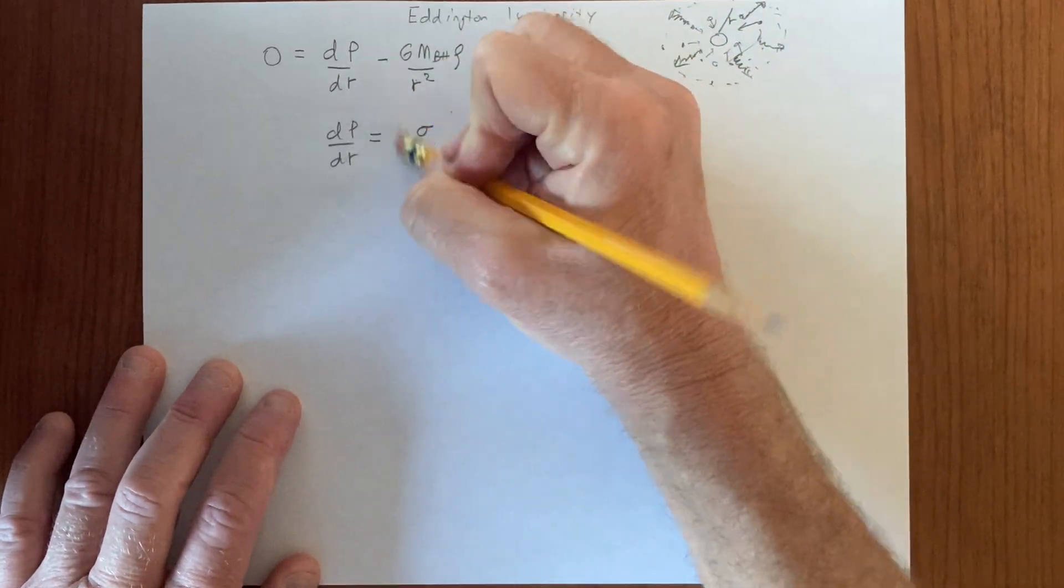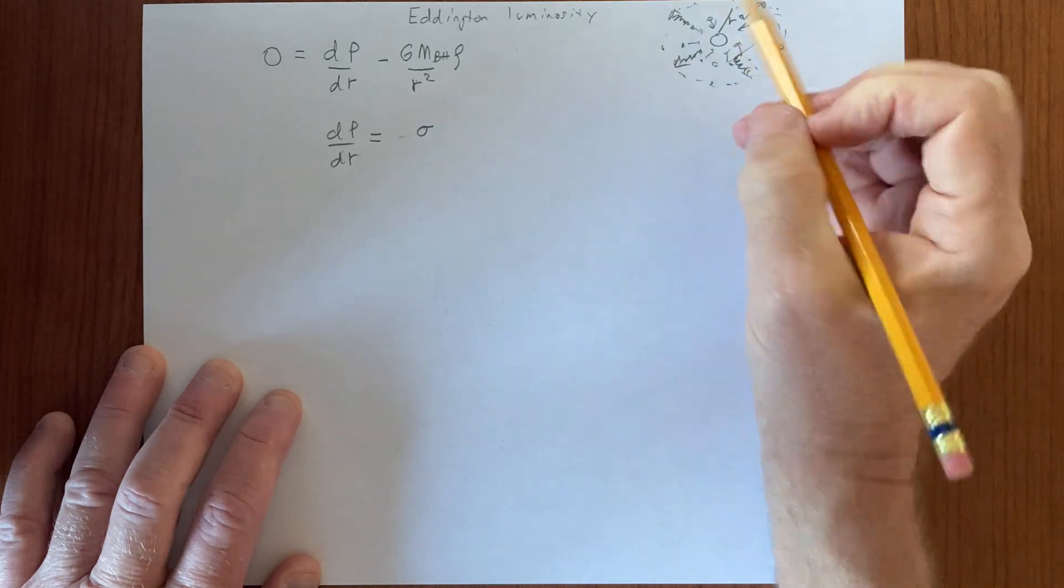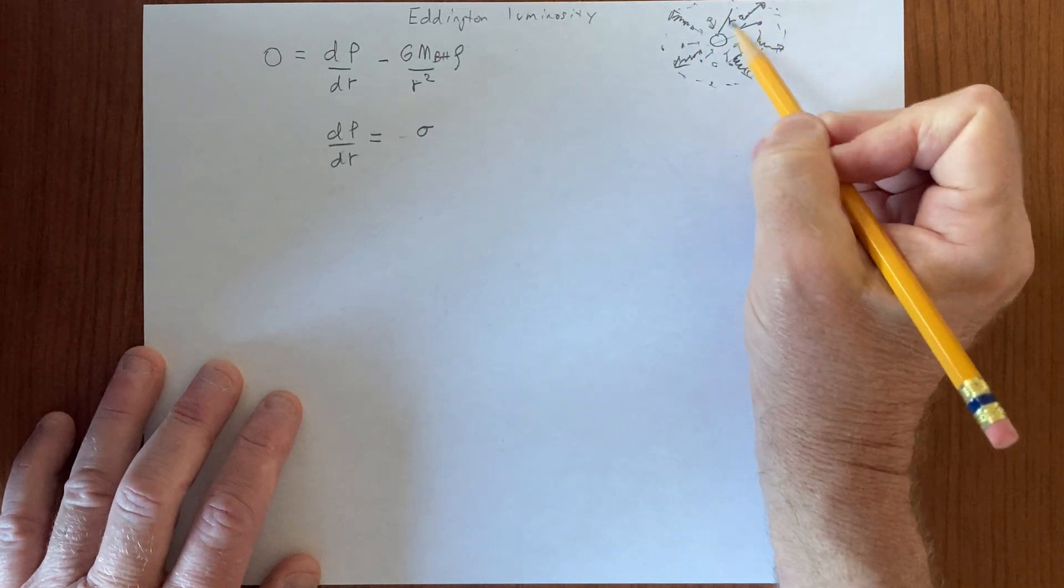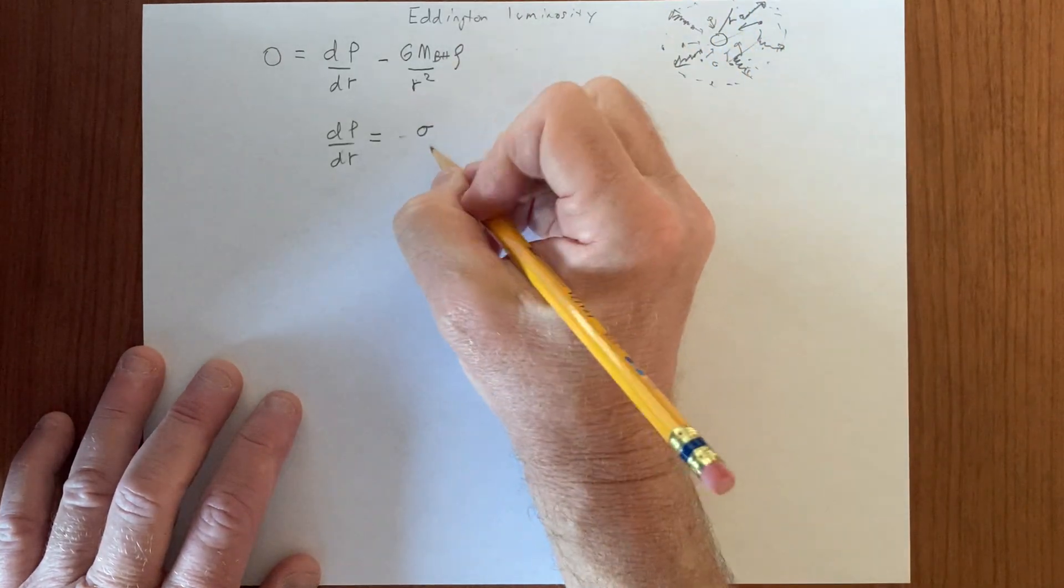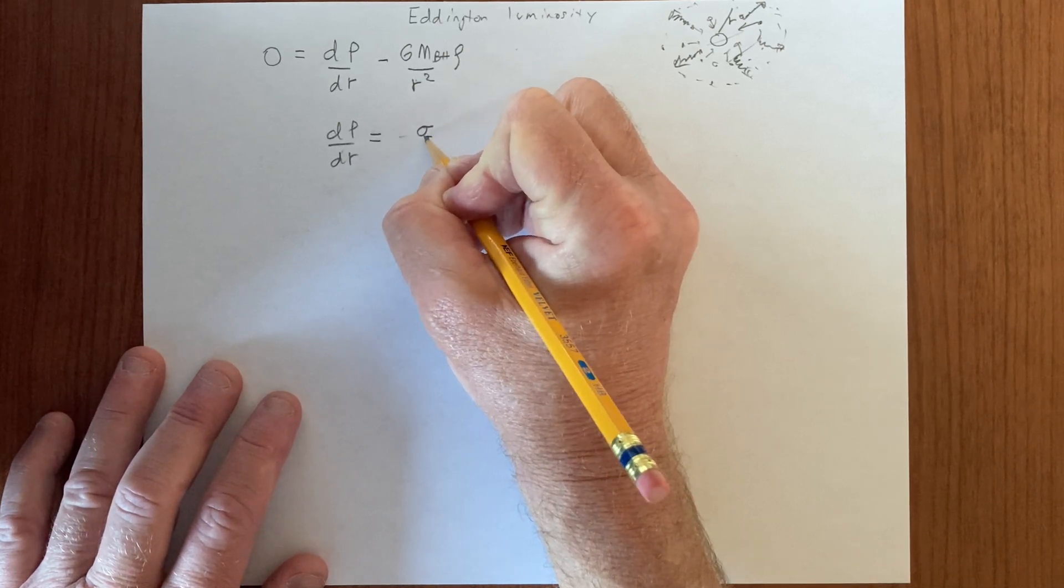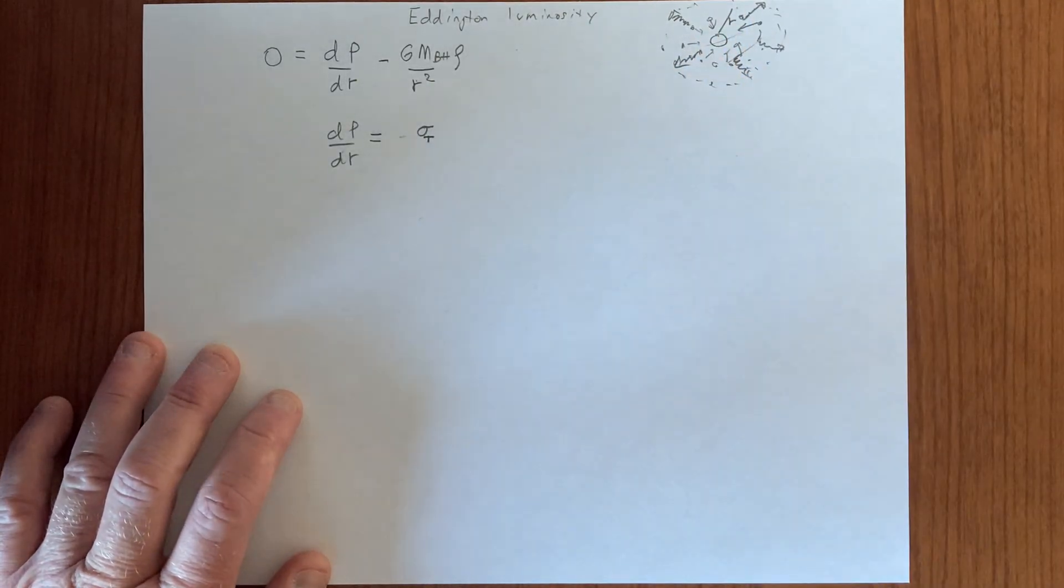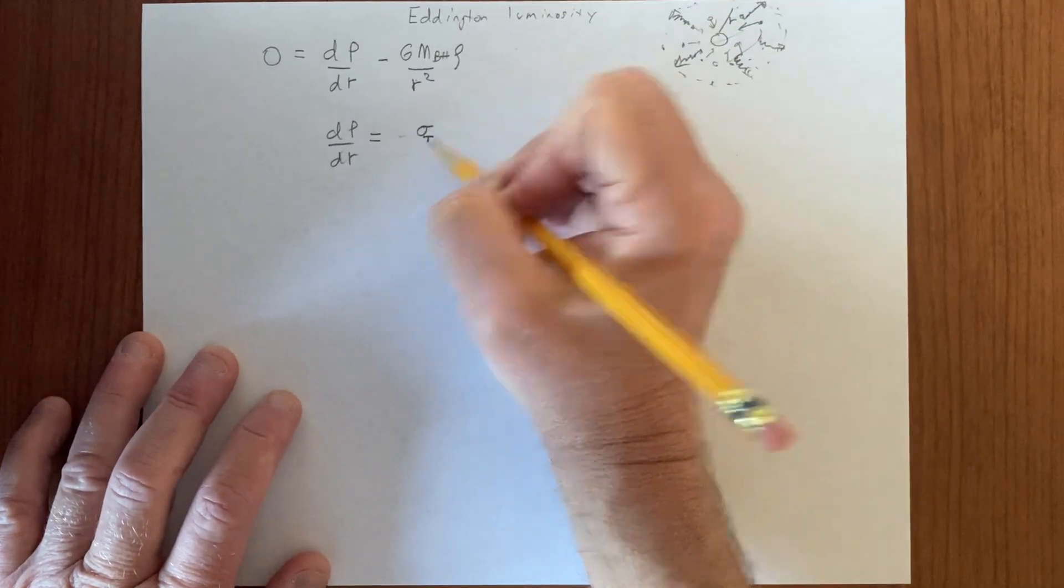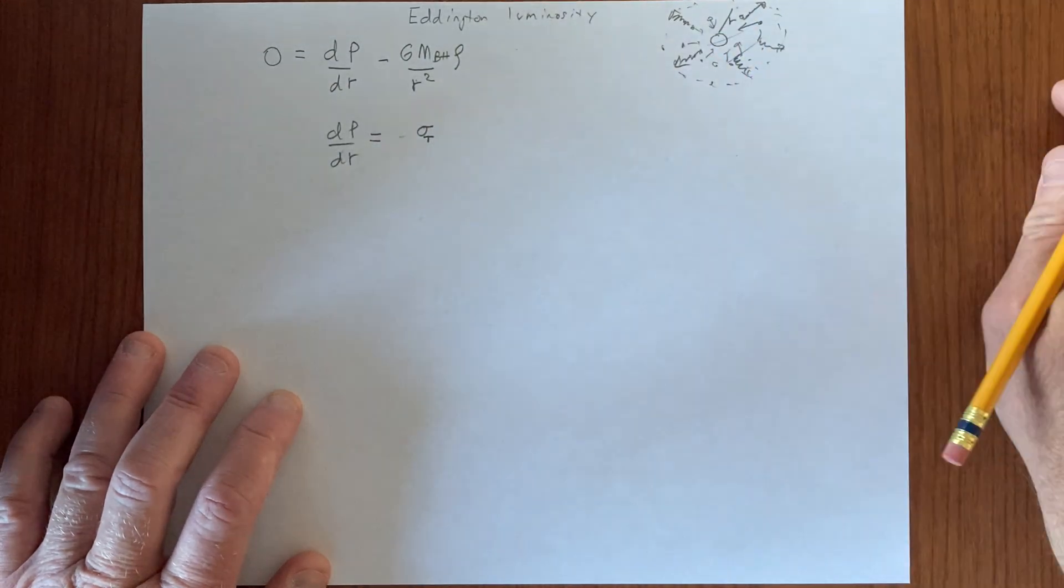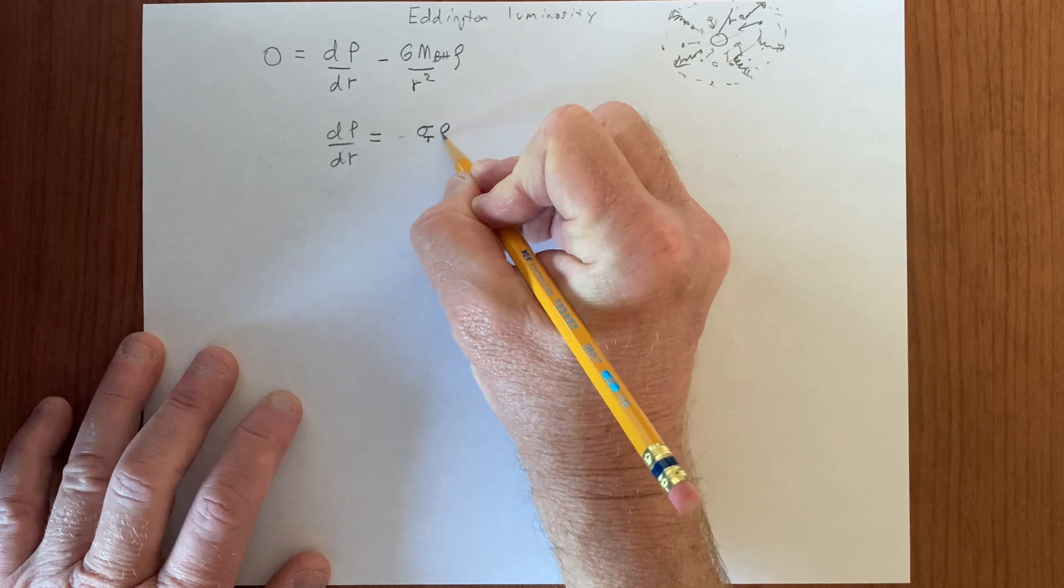That's called the cross-section sigma. Usually we see sigma t for a kind of hydrogen that doesn't have, a hydrogen that's ionized, that's absorbing the radiation. It depends on the density, it depends on the mass of the proton.